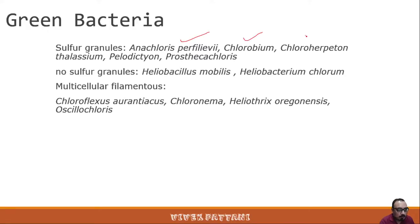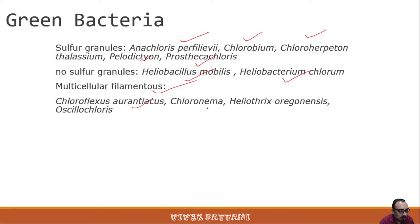Green bacteria examples include Chlorobium, Chloroherpeton, Thalassium, Paleodictyum, and Prosthecochloris, with no sulfur granules: Heliobacillus mobilis and Heliobacterium chlorum. With multicellular filaments: Chloroflexus aurantiacus, Chloronema, and Heliothrix oregonensis.